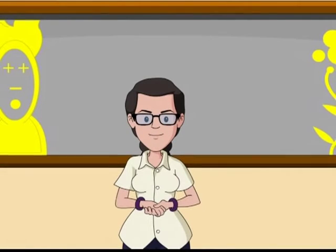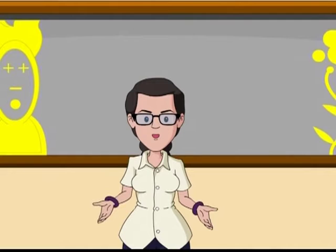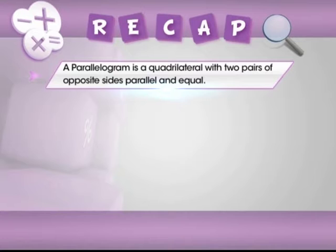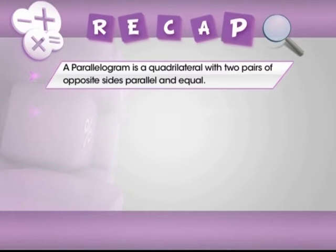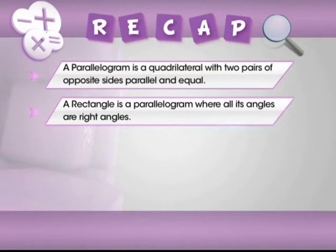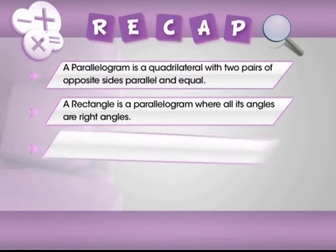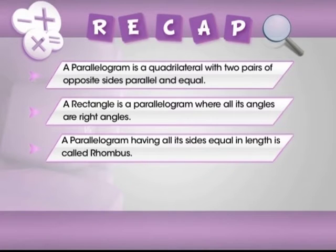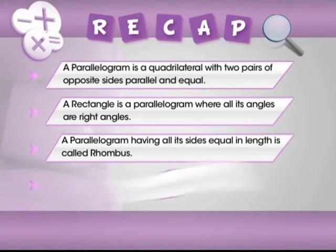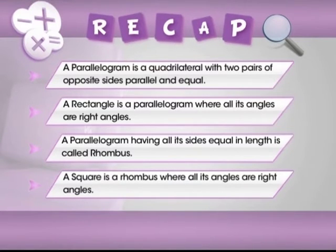Now let's recap. A parallelogram is a quadrilateral with two pairs of opposite sides parallel and equal. A rectangle is a parallelogram where all its angles are right angles. A parallelogram having all its sides equal in length is called a rhombus. A square is a rhombus where all its angles are right angles.